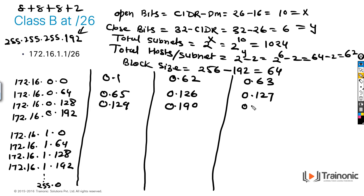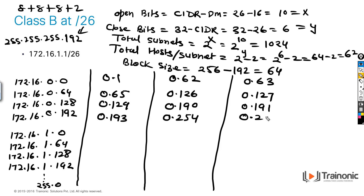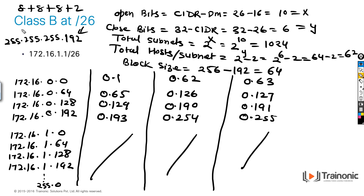For the first subnet: first host is .1, last host is .62, and broadcast is .63. Then the next block starts at .64, same process happens for all — only the third octet changes as we move through all subnets.